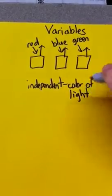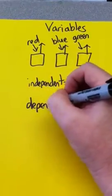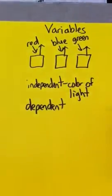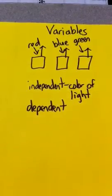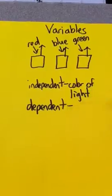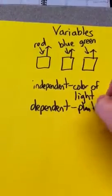And then the dependent variable is the one that you're measuring at the end to see if the independent variable affected the experiment. So the dependent variable for this one is going to be plant height.